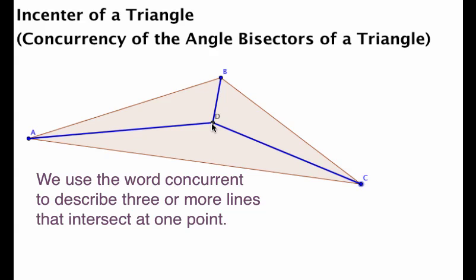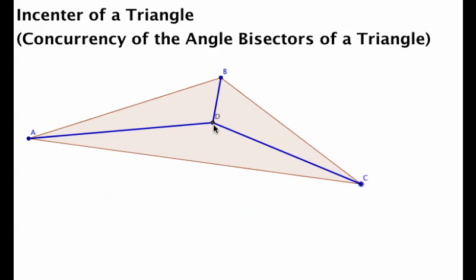It's when three or more line segments or rays all intersect at one point, and this point in this case is called the incenter, and it'll become clear later why we use this particular name for this type of center.